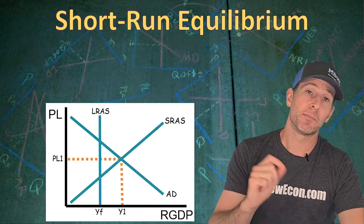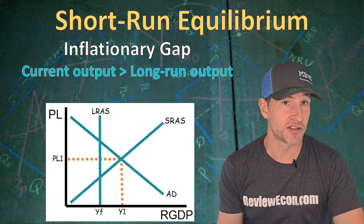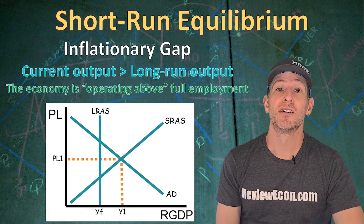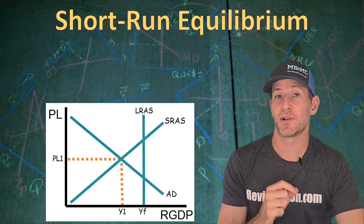If we add in a long run aggregate supply curve, we can see where the economy is today compared to where it will be in the long run. We call this scenario an inflationary gap. The current output labeled Y1 is greater than our long run potential output at YF — the economy is currently producing more than it can in the long run. On your exam, you may see this described as the economy operating above full employment. In this scenario, unemployment is lower than the natural rate because we are producing more than the long run potential output.